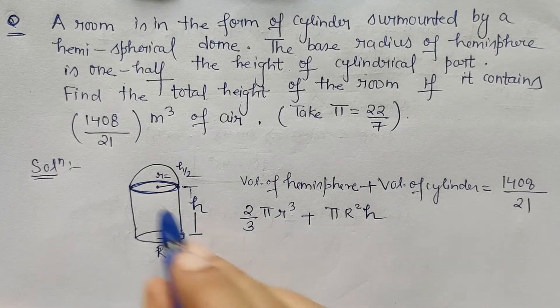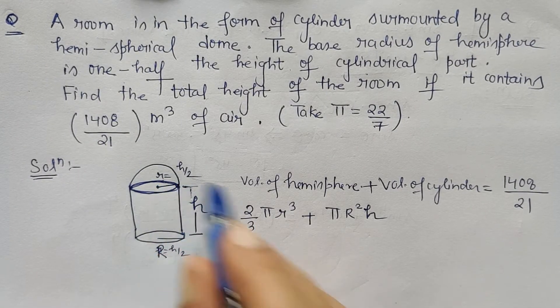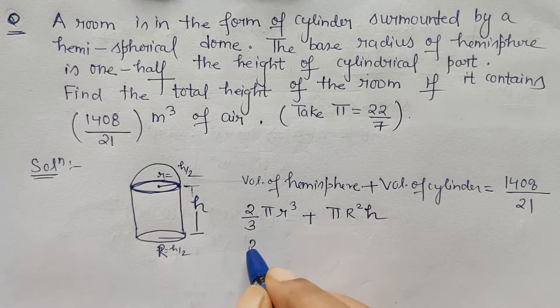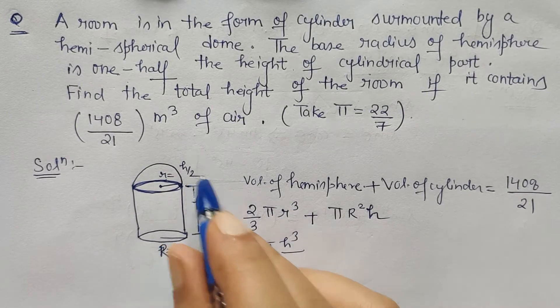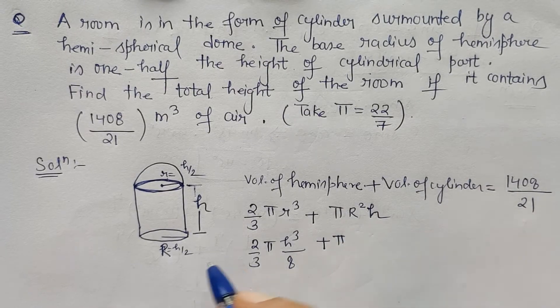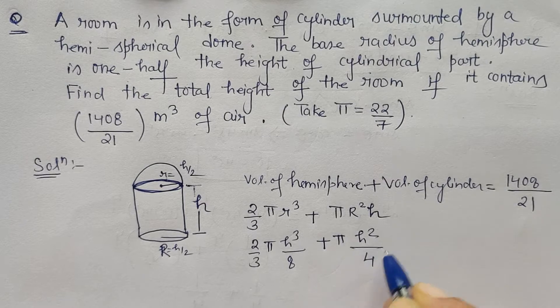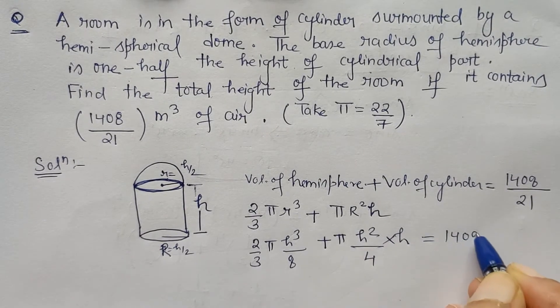The radius of the base of the hemisphere is h by 2, so let's substitute r by h by 2. So this will be h cube, and cube of 2 is 8, plus pi and here r is again h by 2, so it is h square by 4, and this h is equal to 1408 by 21.